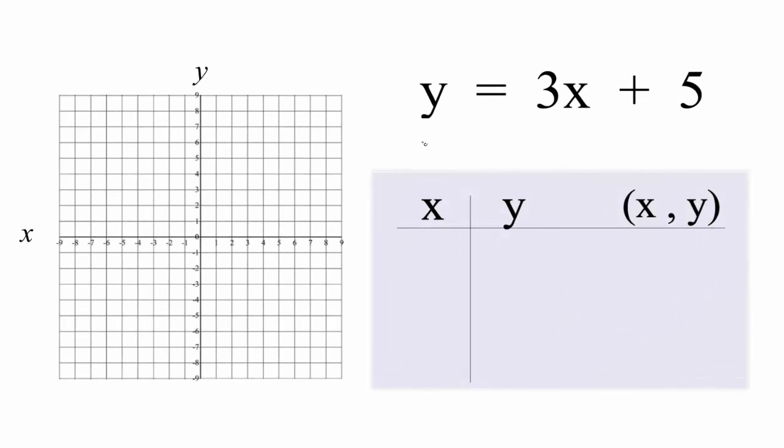Let's take a look at how to graph the linear equation y equals 3x plus 5. We're going to do this two ways. First we'll just plug some values in for x and then look at the corresponding value for y and graph that. We'll also use the slope intercept formula to check our work.